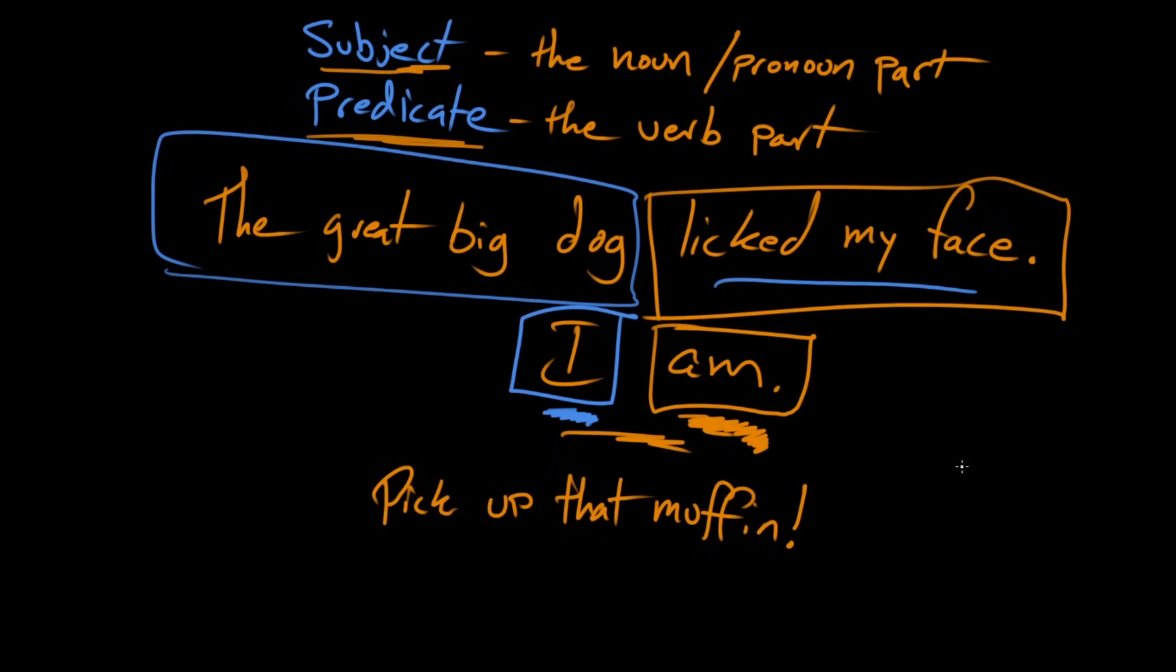That sentence doesn't seem to have a subject. I see how all of this is predicate. Right. Pick up is a verb. And then the muffin is the thing that's being picked up. Like that's all one thing. Where's what goes in the blue box?